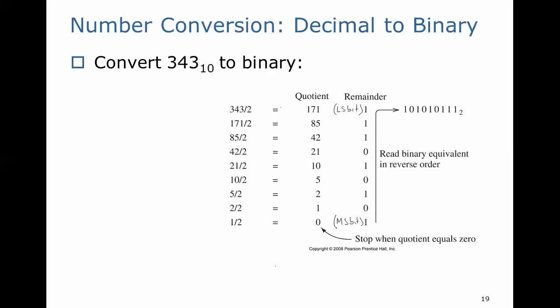The binary value for our decimal number can be read out by taking all of the remainders, beginning with the most significant bit at the bottom and moving up to the least significant bit at the top. So 343 base 10 is equivalent to 101010111 base 2.